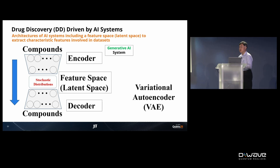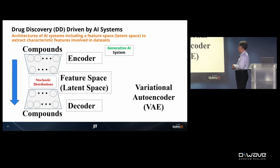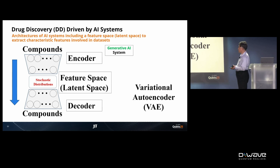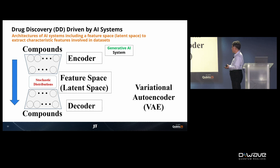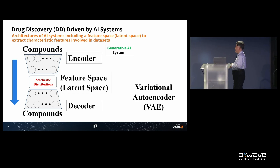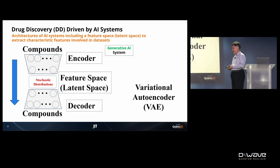In this case, we generate new pharmaceutical compound candidates. This is the generative AI system. In particular, the VAE serves as a platform to which other technologies, algorithms, and theories can be added.